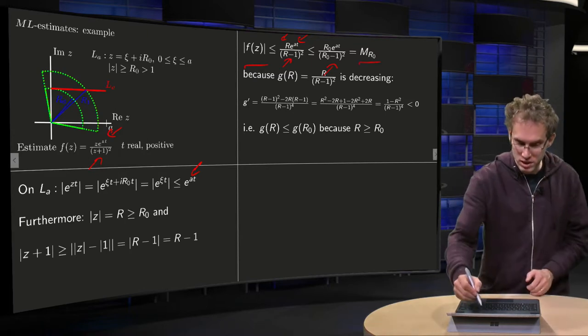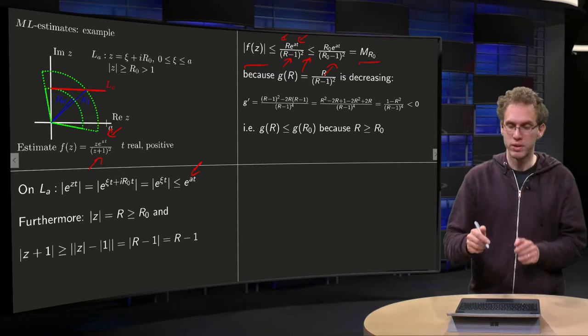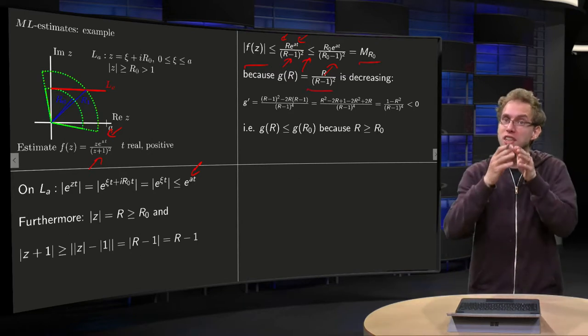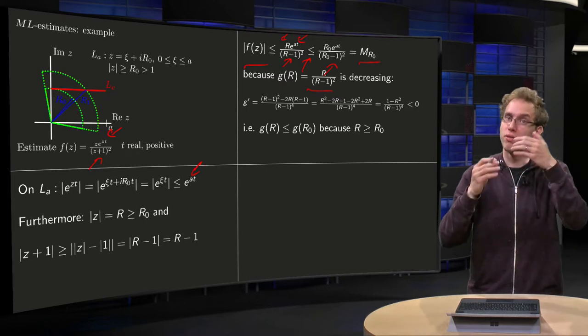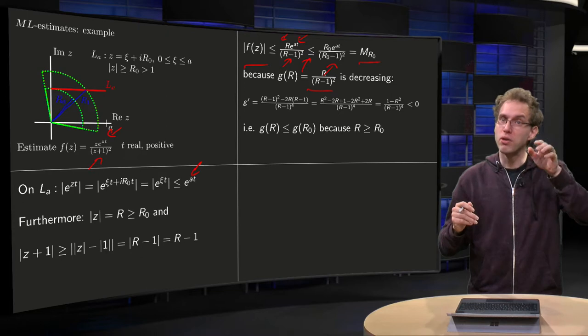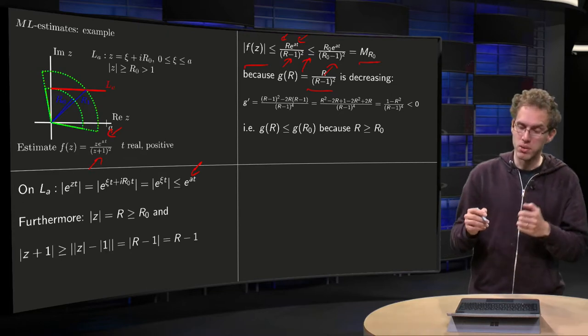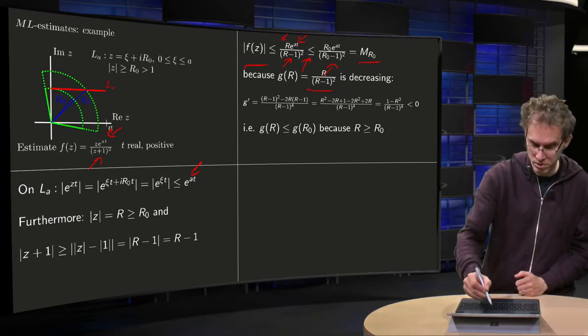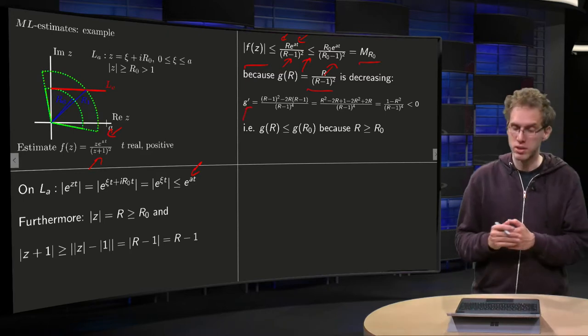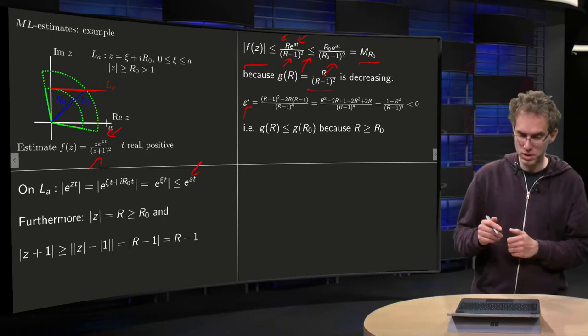And why does this inequality hold? Well, that's because this function G(R), R over (R-1) squared, is a decreasing function of R. So if you make your R bigger and bigger, then your bound becomes smaller. So how do we see that? Well, you can compute G prime over here.